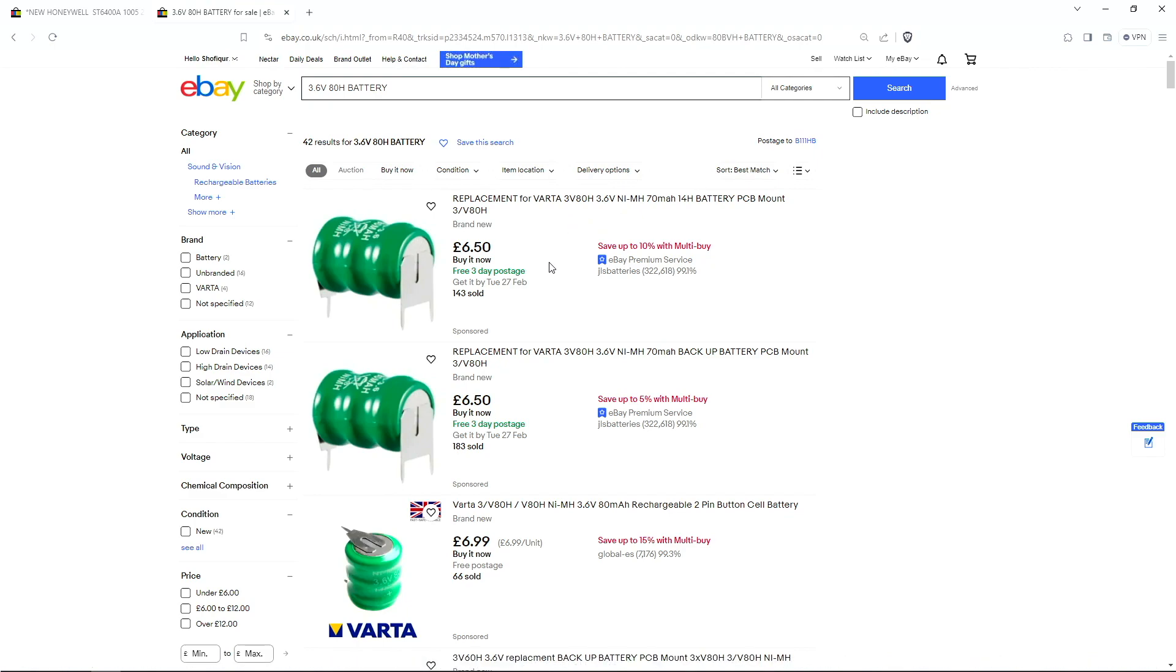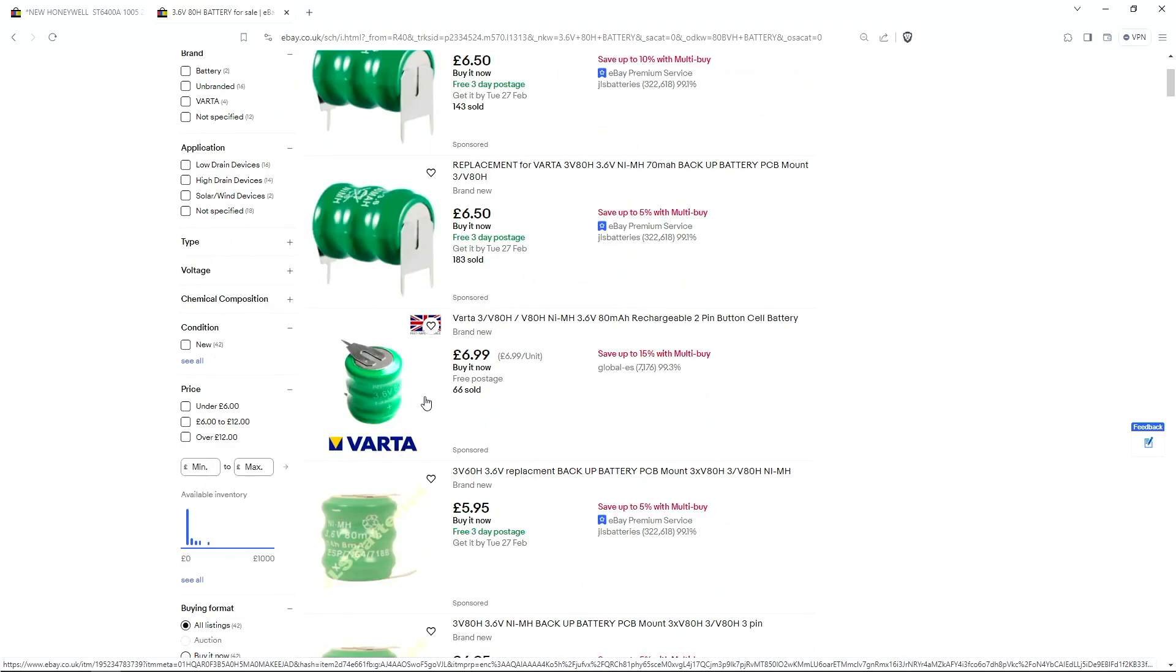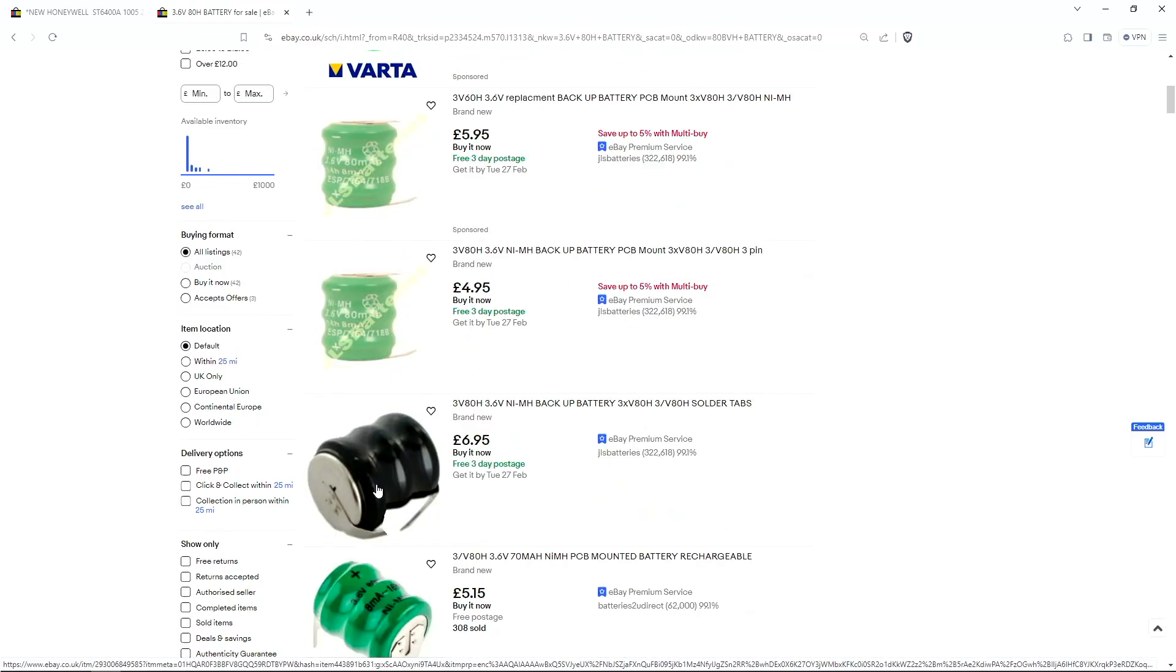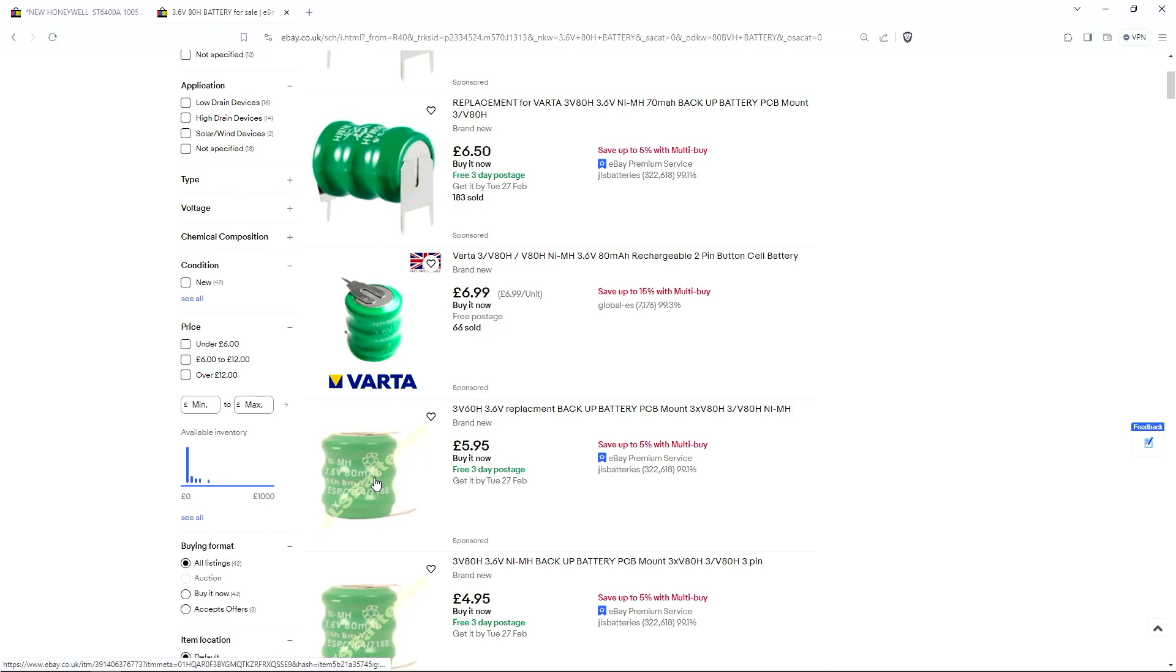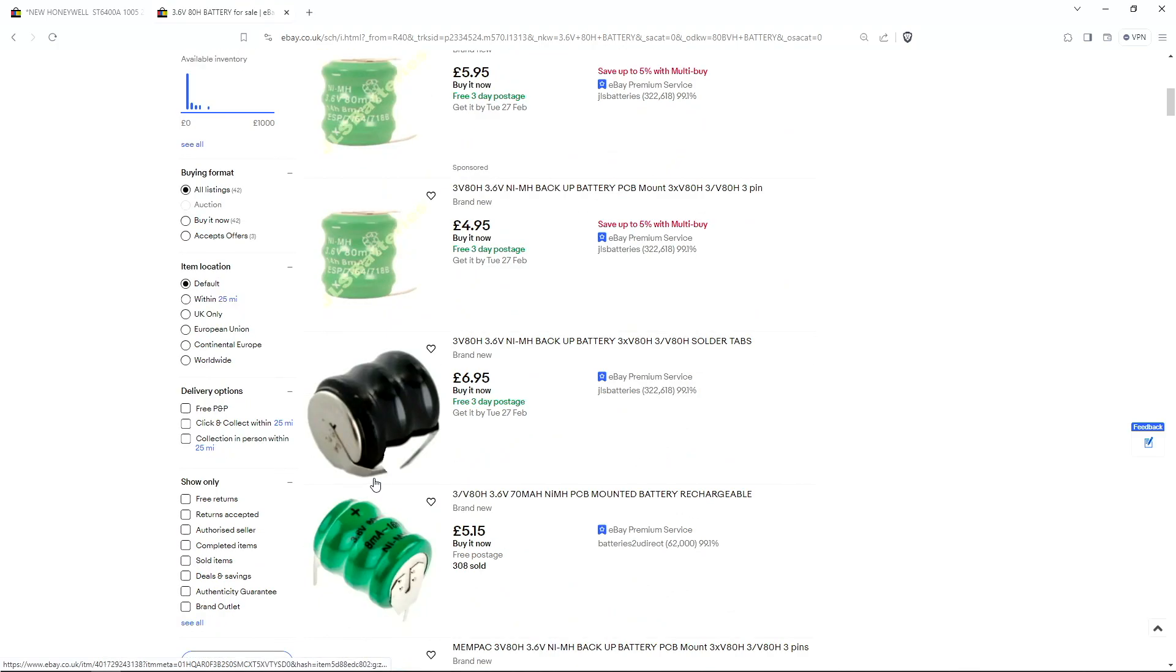Now, the key thing that you want to look for when you're searching for this battery is you want the battery with 3 solder points at the bottom, which is what we've got on our board. Some of them here, like this one, this is a 2-pin type. It's got 2 solder points at the bottom. You don't want this. For our board we want the 3-pin type, so just bear that in mind. And as long as it's a Varta, it should be the exact same size. So you've got a range here to choose from. Prices are from around 5 pounds to 6, 7 pounds, around about that. That's what you're expecting to pay for it.